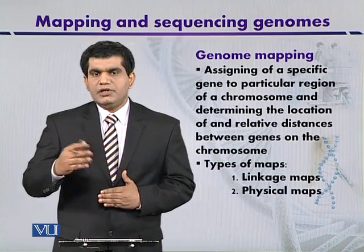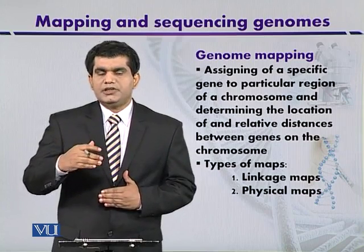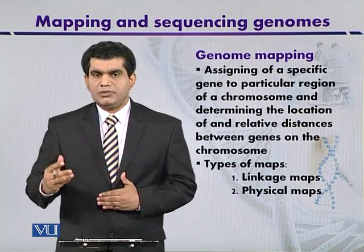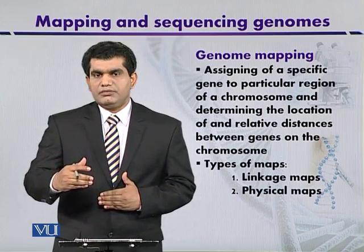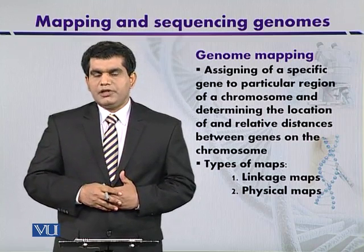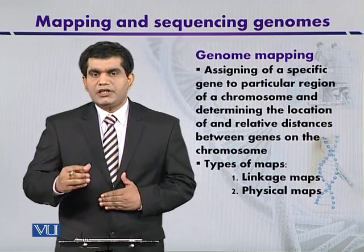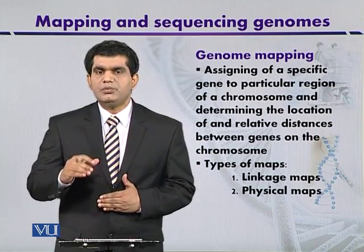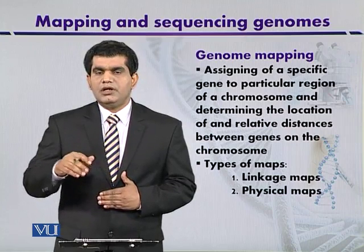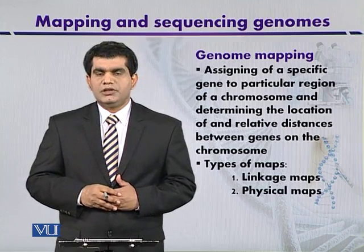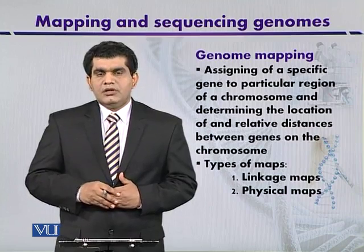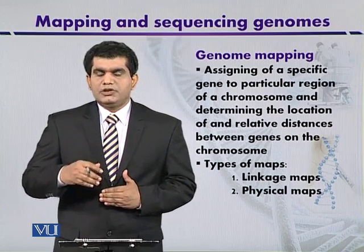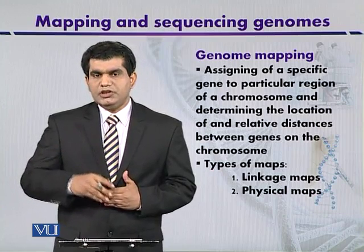In the case of a linkage map, it only gives the relative positions of the genes and relative distances among them. In the case of physical mapping, we can exactly pinpoint the location of the gene and calculate the distance among them in terms of nucleotide base pairs. We can say that genome mapping allows us to navigate around the genome.